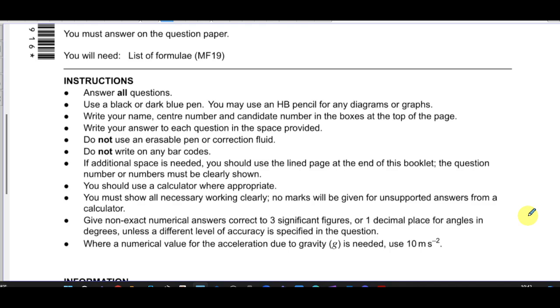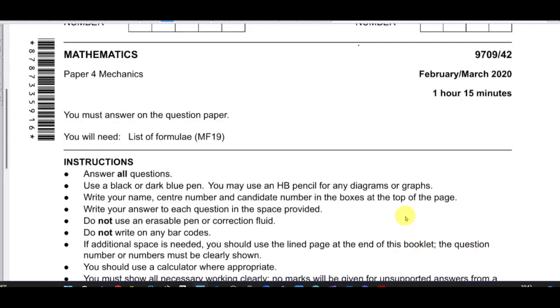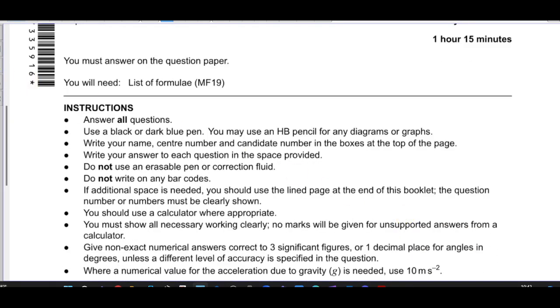And also, the value of G in the Cambridge M1 exams should be used as 10 meters per second squared. In Edexcel, for example, it's 9.8. So that's important for you to realize. And yeah, so now we're going to get started. Now, question number one.